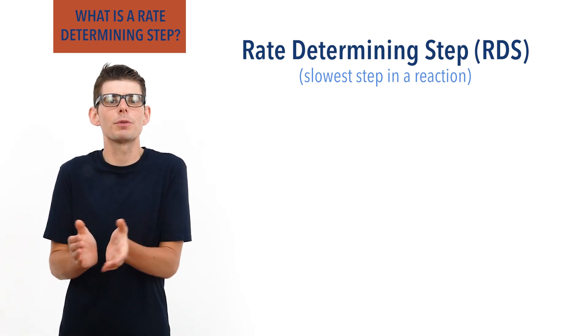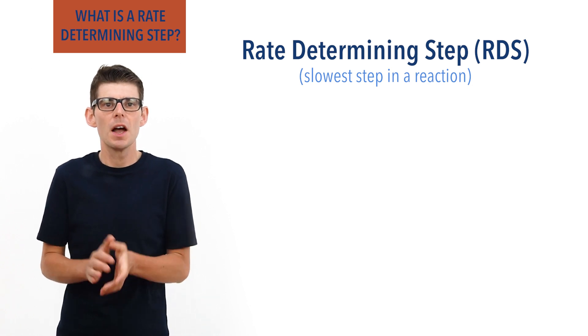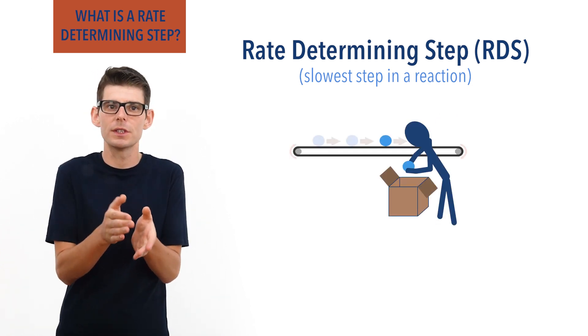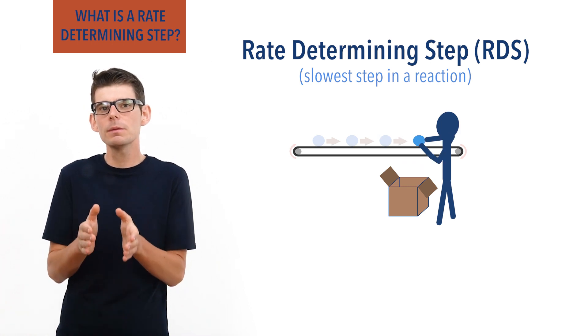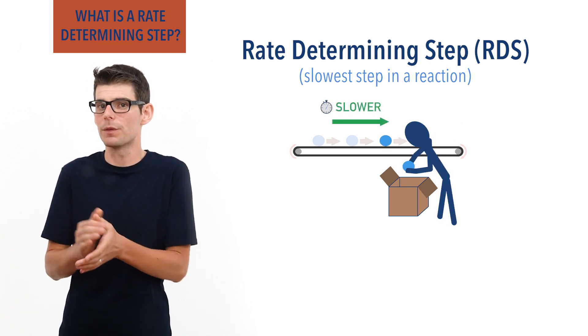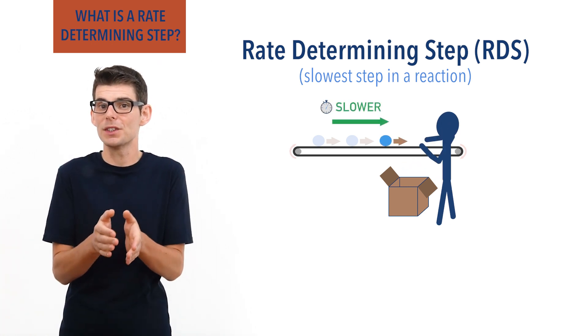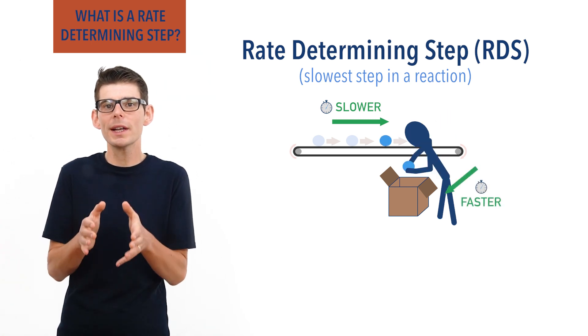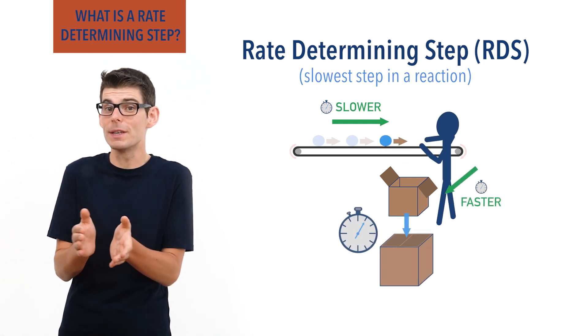This is a bit like a production line in a factory. Imagine you're in a small factory packing boxes of an item. If the items take longer to get to you on a conveyor belt than the length of time it takes you to pack them, then how quickly boxes get filled isn't really based on you.